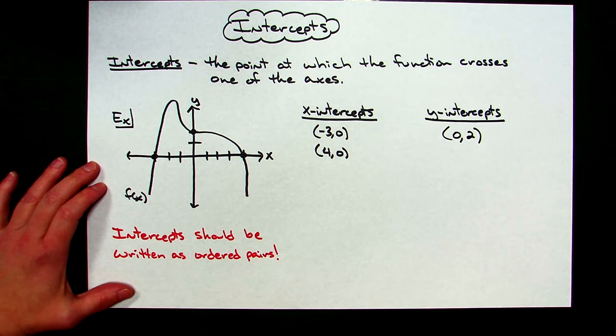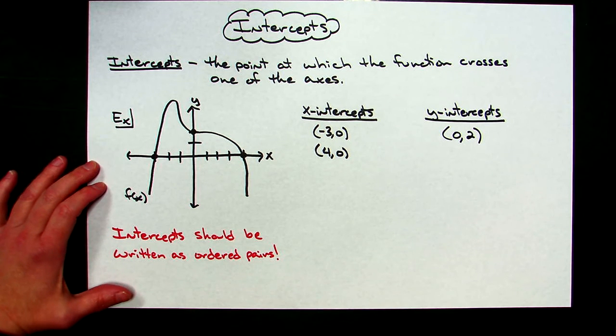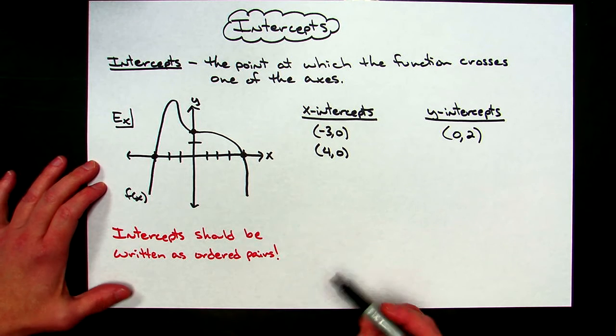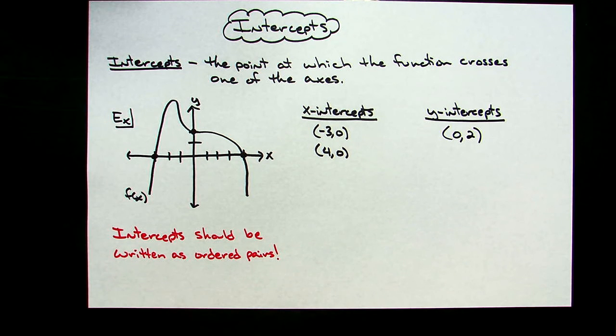Now I do have down here a little note that intercepts should be written as ordered pairs. I just always feel like they are because it literally is the point at which the graph crosses one of the axes, so therefore I like it written as points.